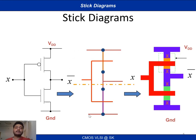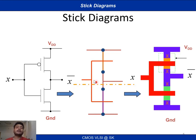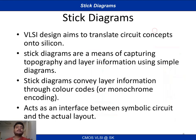This is the VDD line and this is your ground line. All PMOS transistors should be present above the demarcation line, and all NMOS transistors will come below the demarcation line. Only the polysilicon layer and metal layer can cross this demarcation line. Stick diagrams capture topography and layer information using simple diagrams, and convey layer information through color codes — or you can use monochrome encoding. The stick diagram acts as the interface between the symbolic circuit and the actual layout.